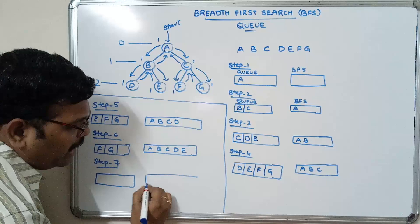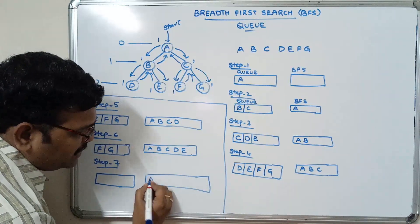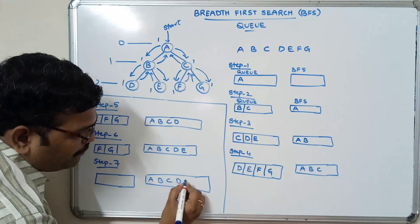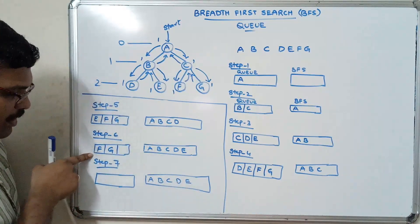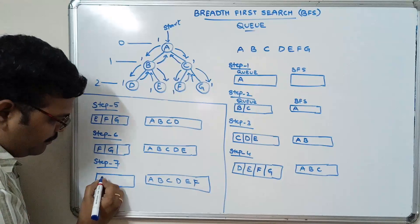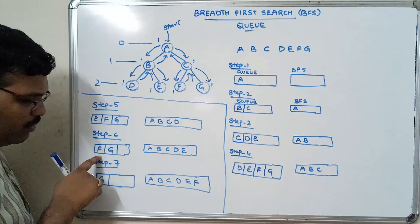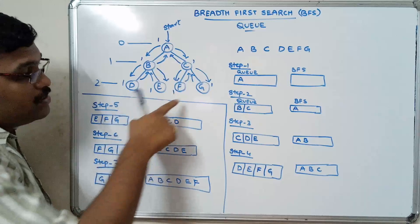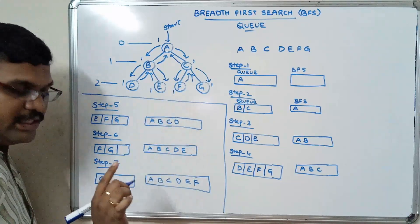Step seven: remove the element from the queue and place it in BFS. F is removed and placed in BFS. We need to insert all adjacent nodes of F into the queue, but F has no adjacent nodes, so just remove it.